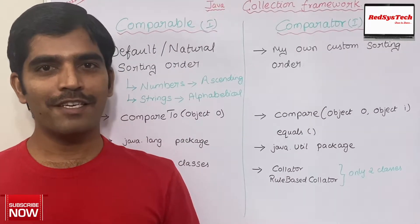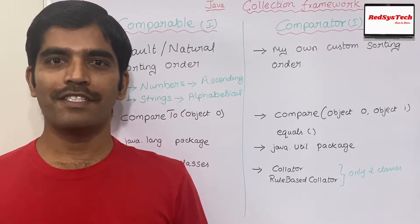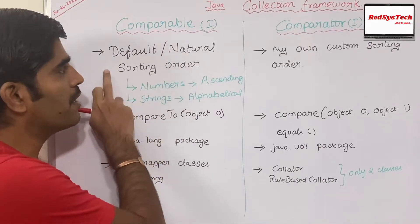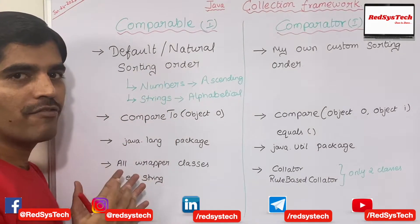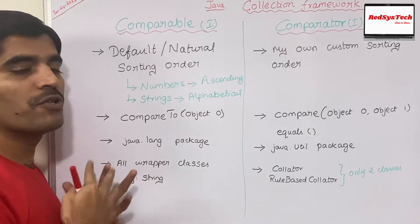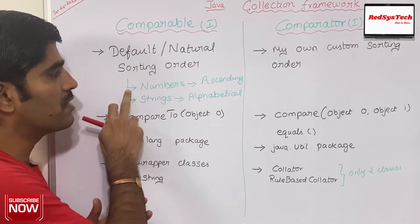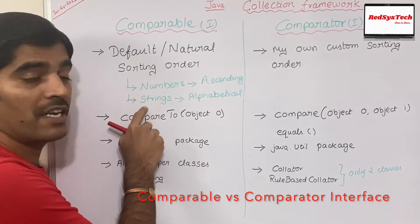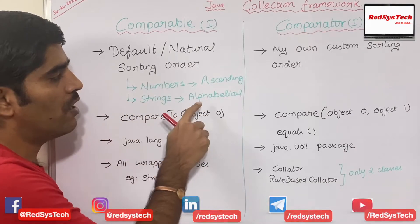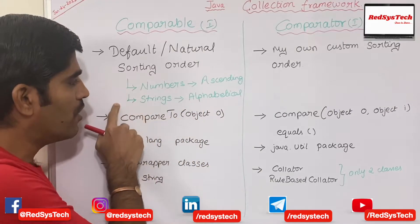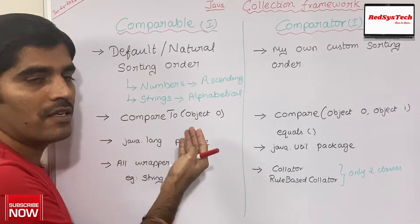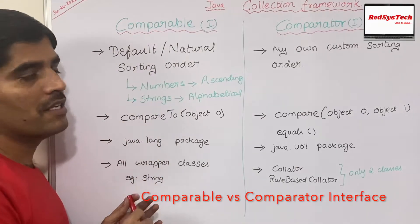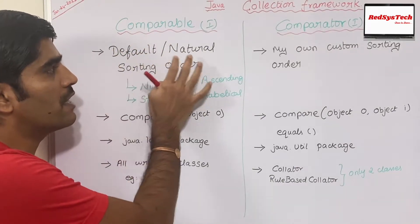I have written some key differences between comparable interface and comparator interface in Java. Comparable interface is used mainly if I want to go with default or natural sorting order. For example, if I am trying to sort some values based on numbers, I am going to get them in ascending order. And if I want to sort strings, I am going to get them in alphabetical order — A to Z. So if my requirement is to sort numbers in ascending order or sort strings alphabetically, then I should go for comparable interface.